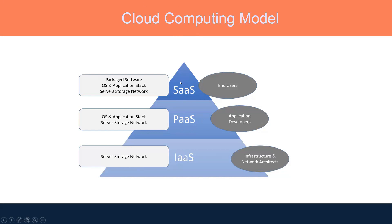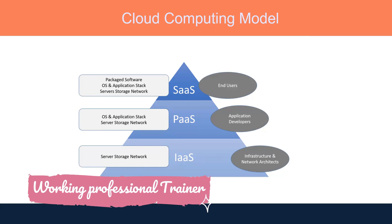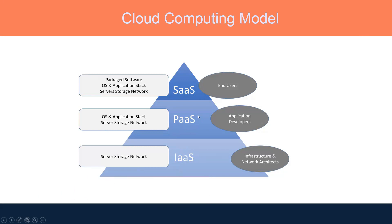Examples of SaaS include Dropbox, which provides services to store files and photos, and Gmail. We have three service models: Infrastructure as a Service, where we provision infrastructure; Platform as a Service, where we use a platform without provisioning infrastructure; and Software as a Service, where we use ready-made applications. SaaS is used by end users, PaaS by application developers, and IaaS by infrastructure teams or network architects.